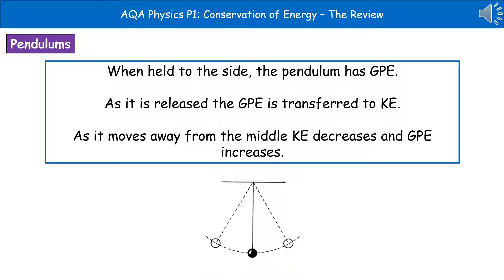The second example is when we think about a pendulum — a weight hung on a string attached to a surface. When you lift it out to the side and hold it there, the pendulum has gravitational potential energy. As you release it, that gravitational potential energy is transferred to kinetic energy. As it moves away from the middle, kinetic energy decreases and gravitational potential energy increases. But this isn't going to go on forever. Eventually the pendulum comes to a stop because we are transferring some of the energy to the surroundings as a result of air resistance.